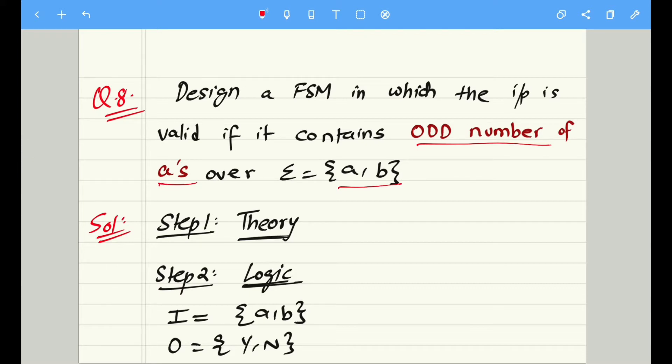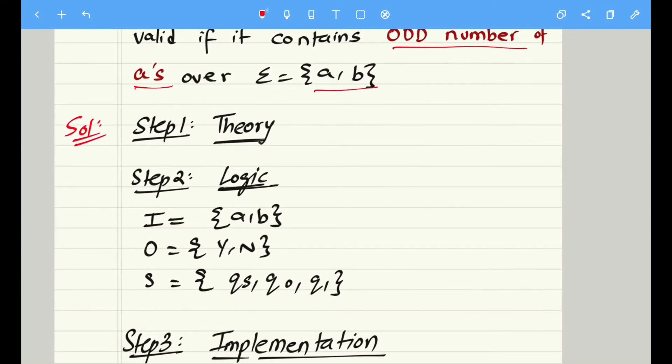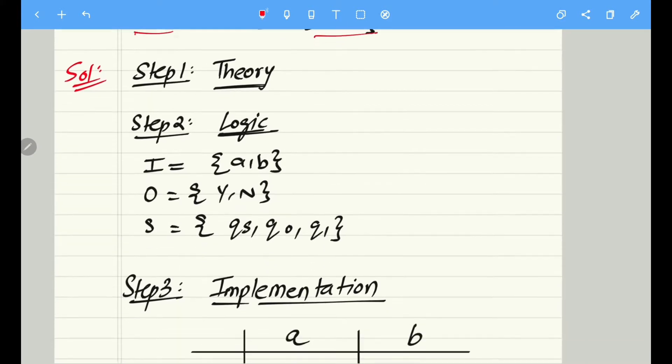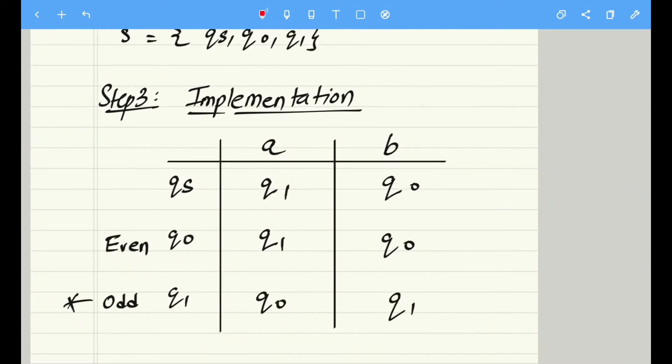The theory remains the same. Step two is all about the logic. The input is made up of a, b. The output is either yes or no. And we now know that the states can be filled up easily after we complete the implementation table.